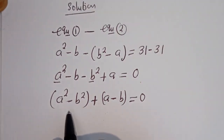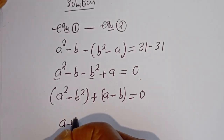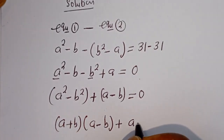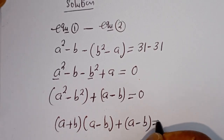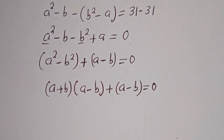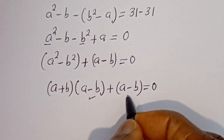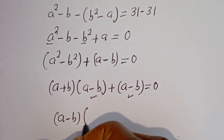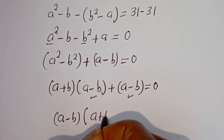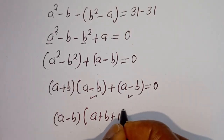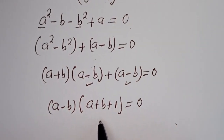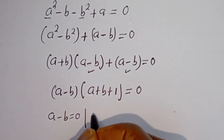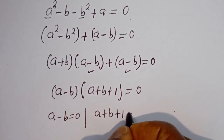A squared minus b squared is in the form of a difference of squares, that is (a plus b)(a minus b), plus (a minus b) equals zero. Now here, a minus b is common — let's factor it out. We get (a minus b)(a plus b plus 1) equals zero. There are two cases: the first case is a minus b equals zero, and the second case is a plus b plus 1 equals zero.